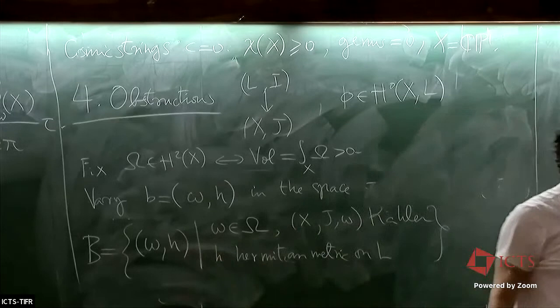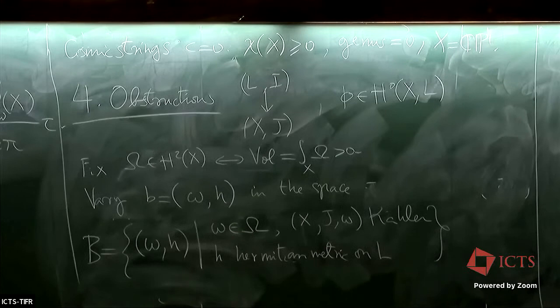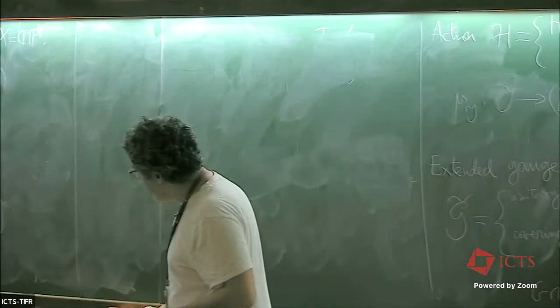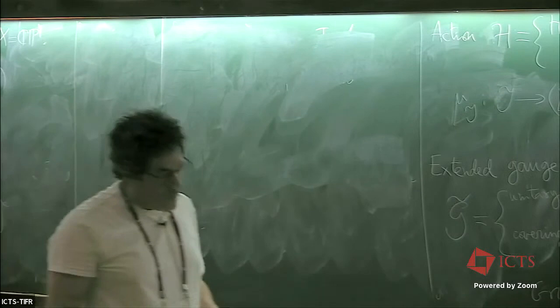And as before, this is Kähler. And H is a Hermitian metric in L. Okay. So maybe the only difference with respect to what I said earlier is that now phi is fixed. But I want to study this space. It's an infinite dimensional space.